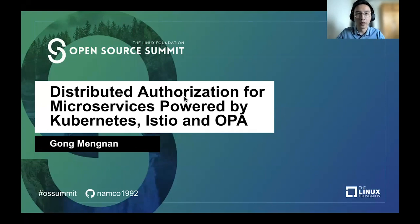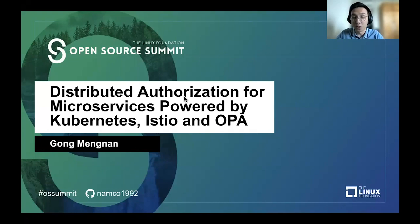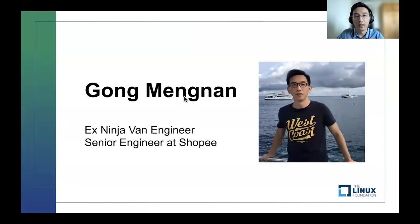Hello everyone, thanks for joining this session. Today's topic is distributed authorization for microservices powered by Kubernetes, Istio, and Open Policy Agent. It involves a lot of tools and techniques, and I will try my best to tell a good story. My name is Gong Meng Nan. I worked at NinjaVan before, a logistics company, and now I'm a senior engineer at Shopee, one of the largest e-commerce platforms in Southeast Asia.